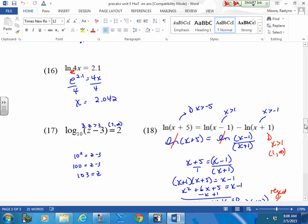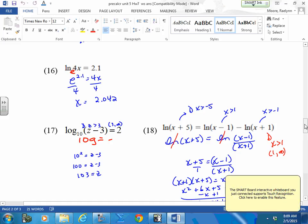Number 17, again, flip this. Log equals exponent. Log equals exponent. There's your base 10 to the 2, equals z minus 3. Add 3, and resolve it. Just resolve it.